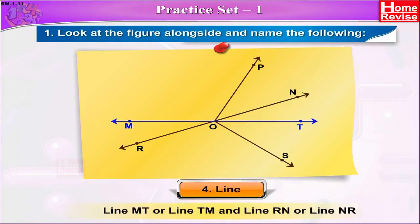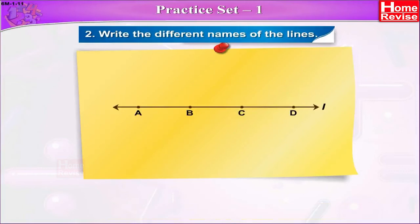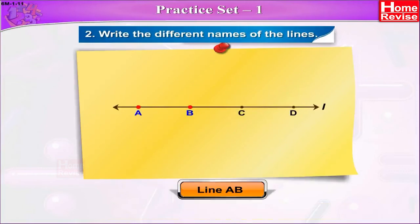Line MT or line TM, and line RN or line NR are the lines in the given figure. Write the different names of the lines. In the figure, line AB is the name of the line. We have studied that a line can be named as either line AB or line BA.